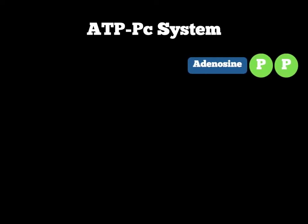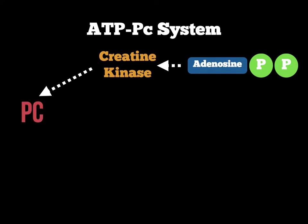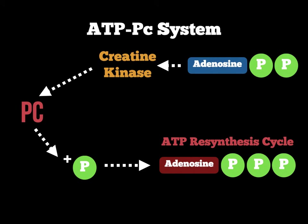When we have high levels of adenosine diphosphate — so there's no energy left for the resynthesis cycle — and we want to perform explosive activity such as jumping, throwing a javelin, or sprinting, this will stimulate an enzyme called creatine kinase. That enzyme will break our fuel, phosphocreatine (PC), and create one phosphate molecule that will be put back into the ATP resynthesis cycle to create adenosine triphosphate. Remember, this system is only creating phosphates to go back into the resynthesis cycle so we can create ATP.